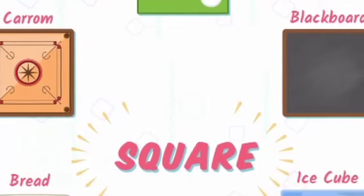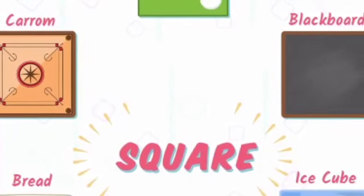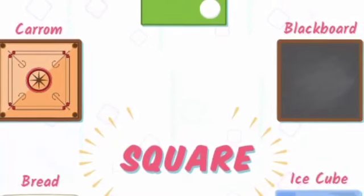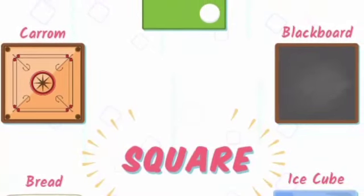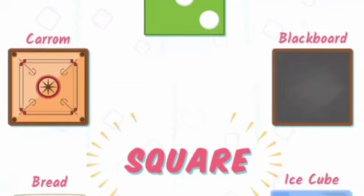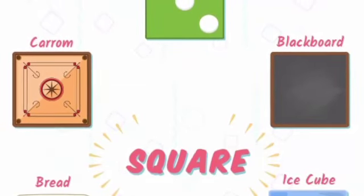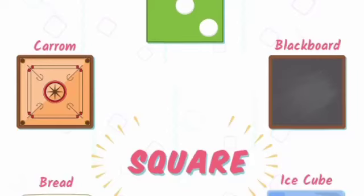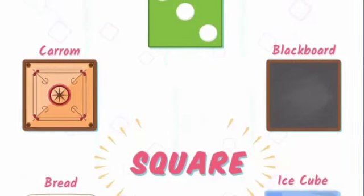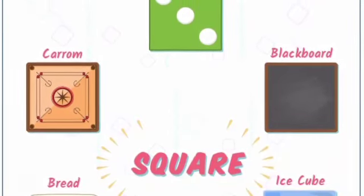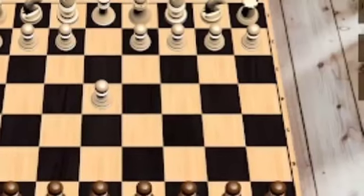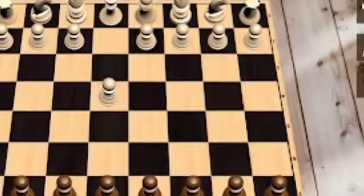Here you can see some square-shaped objects. A carom board is in a square shape. The next one is an ice cube, then bread, and also a blackboard. These are all examples of squares. In your textbook you can also see many more examples.